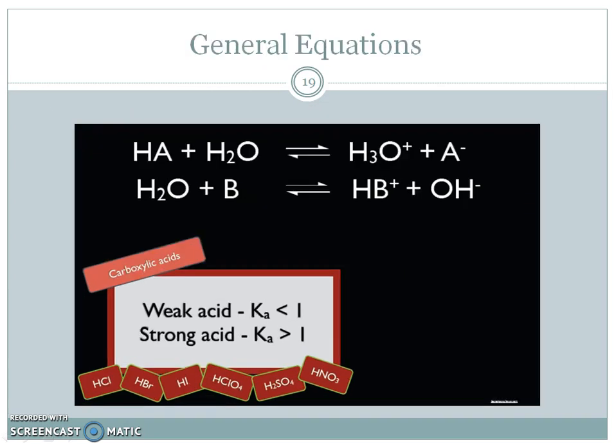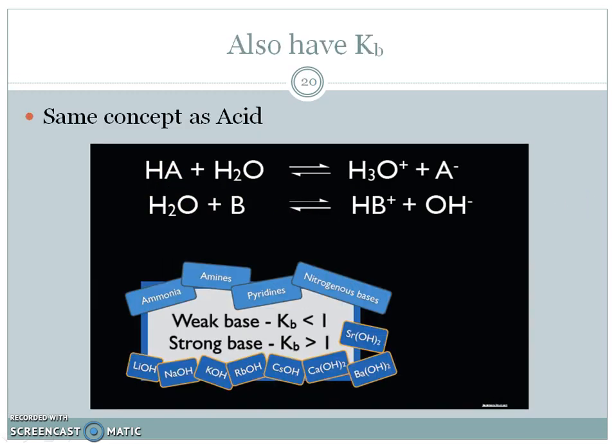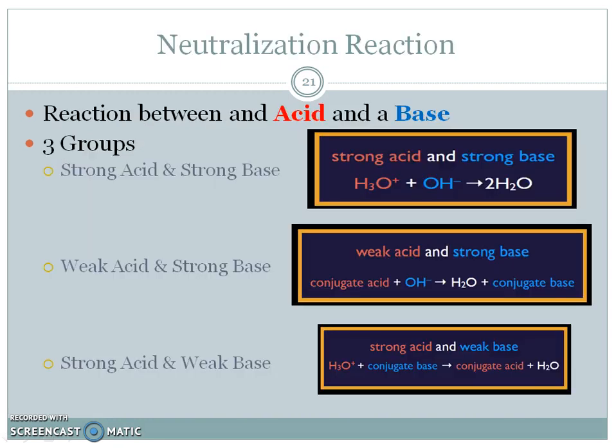Here's some general equations that he went over. Weak acid is usually donated or shown as HA, and our weak bases are usually just regular old B. But here's some general equations that you're going to see in the future. We not only have the Ka for weak acids, we also have the Kb for weak bases, but we can compare the two. Down here he gives you a list of strong bases. Think about that list.